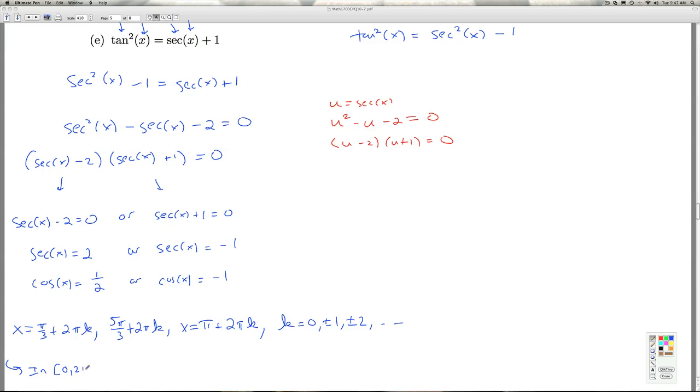In 0 to 2 pi, what do we have? From the first family we just get pi over 3. From the second family we just get 5 pi over 3. And from the last family we just get pi. So this is plugging in the k's like we've done in the last few examples. That'll do it for part E and that'll do it for number 1.